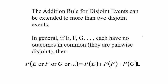The addition rule for disjoint events can be expanded to two or more disjoint events. In general, if events E, F, G, and so on each have no outcomes in common — they're pairwise disjoint — then the probability of E or F or G is just the sum of all their individual probabilities: P(E) plus P(F) plus P(G) and so on.